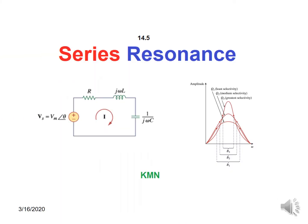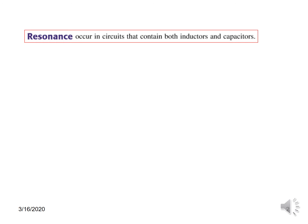Bismillahirrahmanirrahim. In this video, we learn about series resonance circuits. A resonance occurs in a circuit which contains both inductors and capacitors — this is a requirement for resonance to occur. Primarily, there are two types.